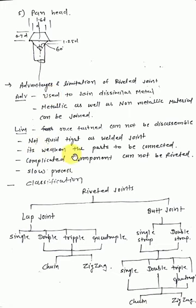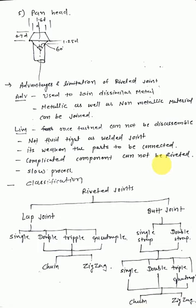The limitations of the riveted joint: it weakens the part to be connected. Why is it weak? Because we have the cylindrical bar, we drill it, and then we have the riveted joint — that is why the part becomes weak. Also, complicated components are difficult to rivet, and it is a slow process. These are the advantages and limitations of the riveted joint.